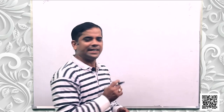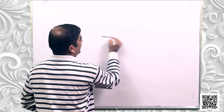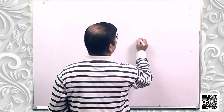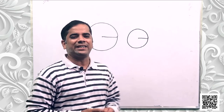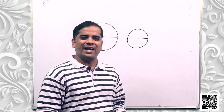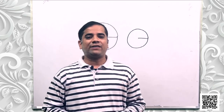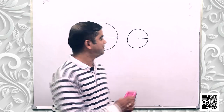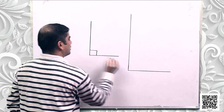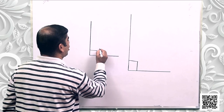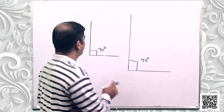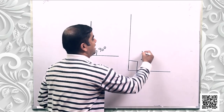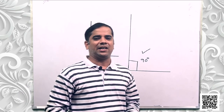Postulate 3 says that a circle can be drawn with any center and any radius. Taking any point as center and any radius, we can construct a circle. With a different point and a smaller radius, we can draw another circle. Postulate 4 says that all right angles are equal to one another. Two right angles may differ in the length of their sides, but the value of the angle included by both sides is always 90 degrees.